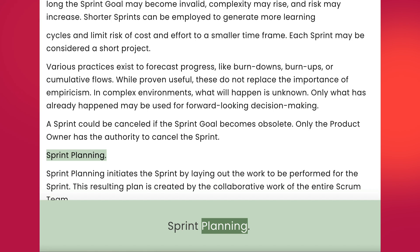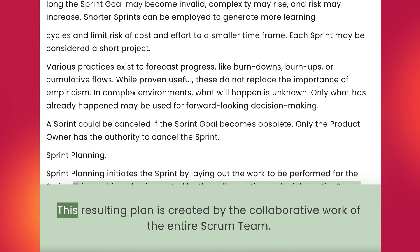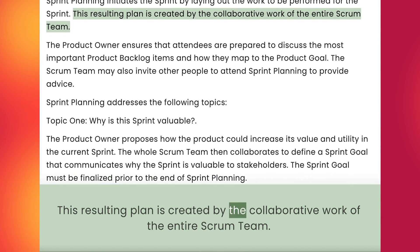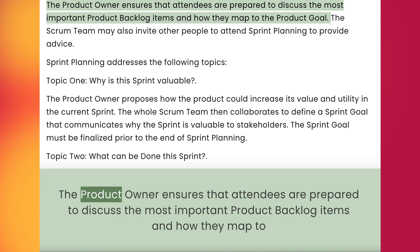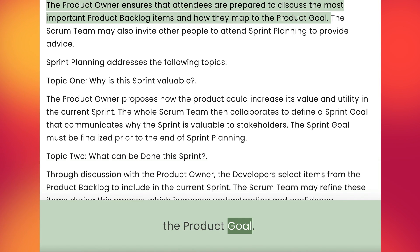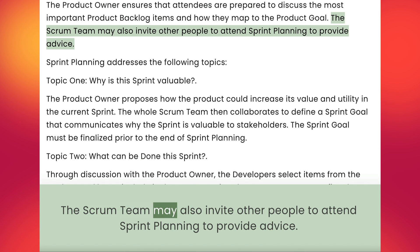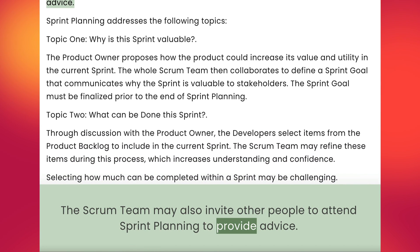Sprint Planning. Sprint planning initiates the sprint by laying out the work to be performed for the sprint. This resulting plan is created by the collaborative work of the entire Scrum team. The product owner ensures that attendees are prepared to discuss the most important product backlog items and how they map to the product goal. The Scrum team may also invite other people to attend sprint planning to provide advice.